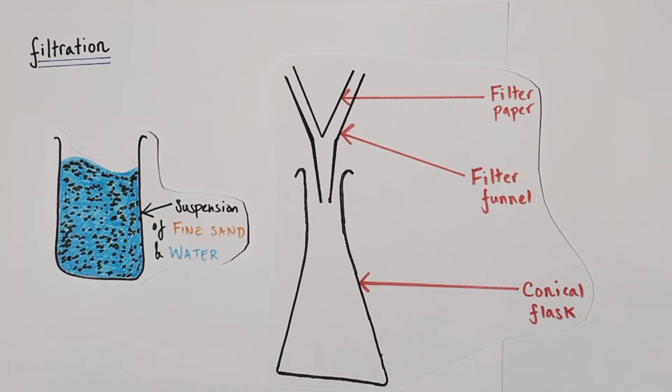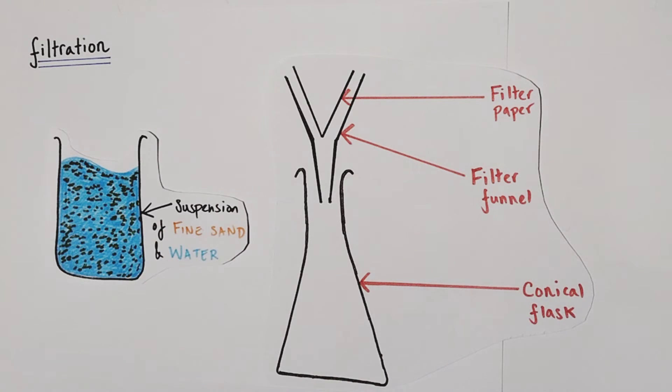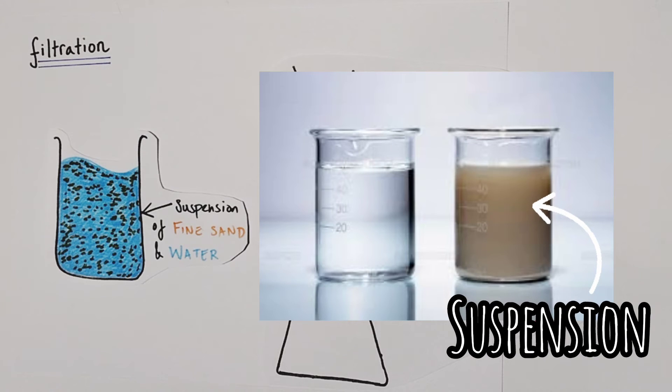Let's go through a simple worked example. What I've chosen here is a suspension of fine sand and water. What is a suspension? Well that's when you have particles of your insoluble solid floating around in the surrounding liquid, in this case water.